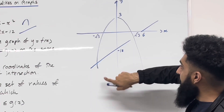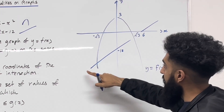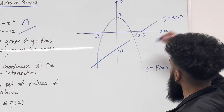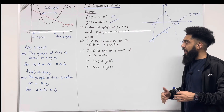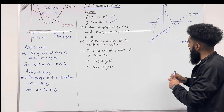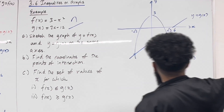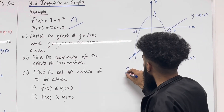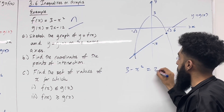There you have it. I've got the graph of y = f(x) and the graph of y = g(x). In Part B it says: find the coordinates of the points of intersection. To find the coordinates of the points of intersection, we need to set the curve equal to the line. So we have 3 - x² = 2x - 12.